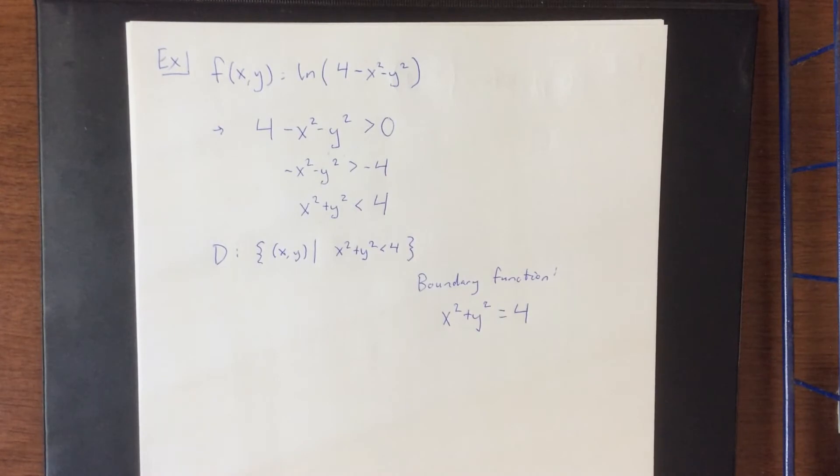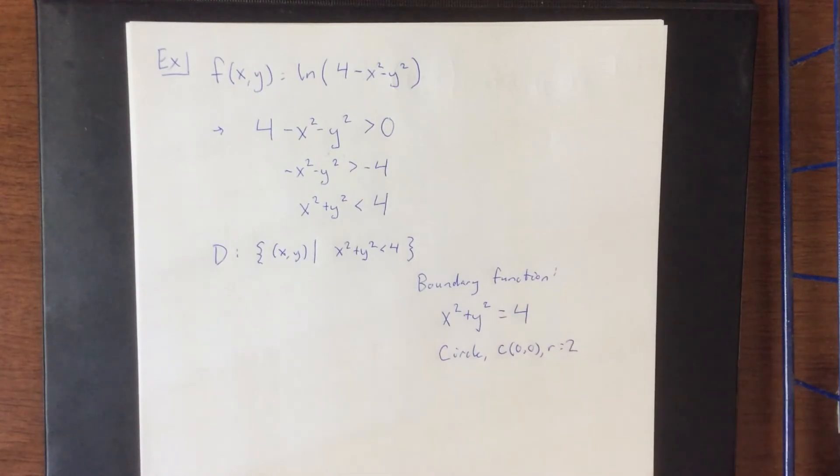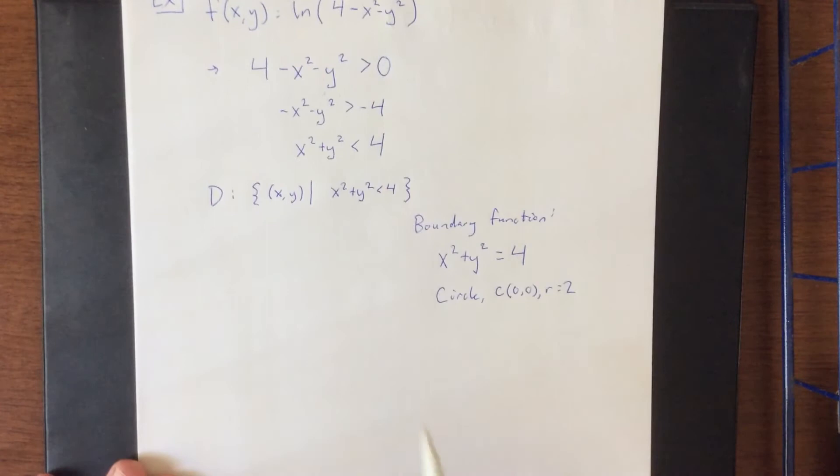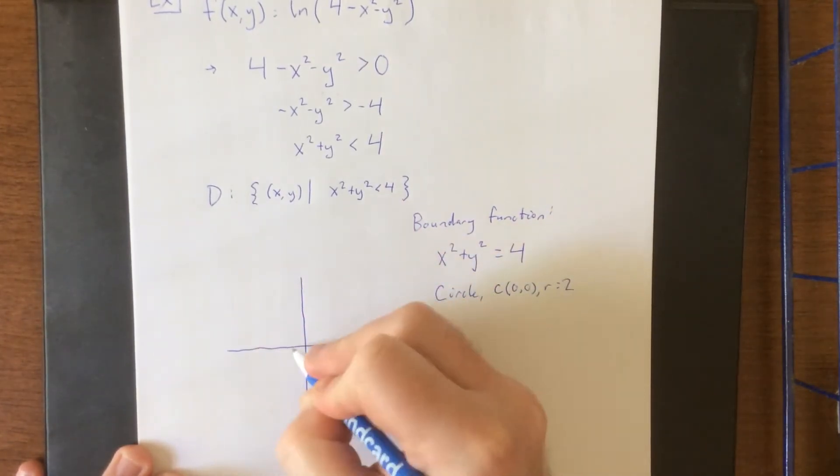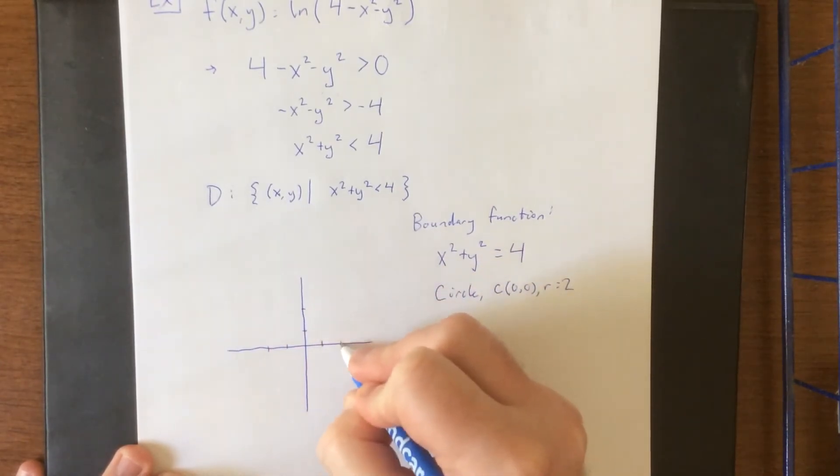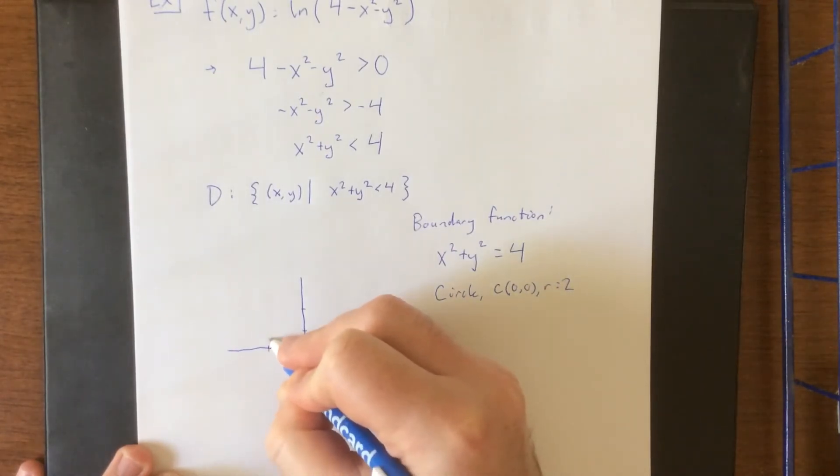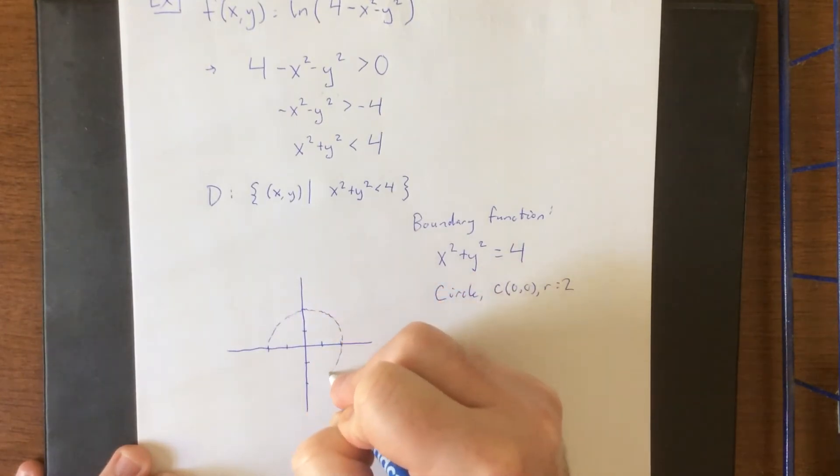So the boundary function in this case would be x² + y² = 4. That boundary function would be a circle with the center at the ordered pair (0,0) and a radius equal to 2. Now because the actual function that we're dealing with, or the actual region that we're dealing with is strictly less than 4, we are going to treat that as a dotted region or dashed region to indicate that we are not actually equal to that value. So we'll make a nice little circle of radius 2 centered at the origin, and this will serve as the boundary for our function.